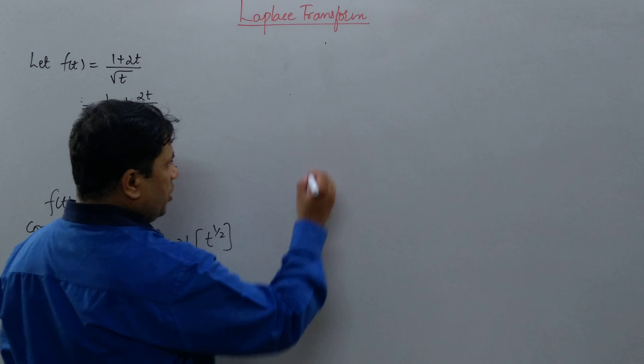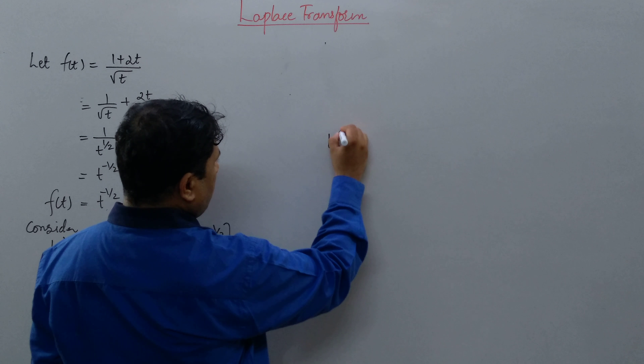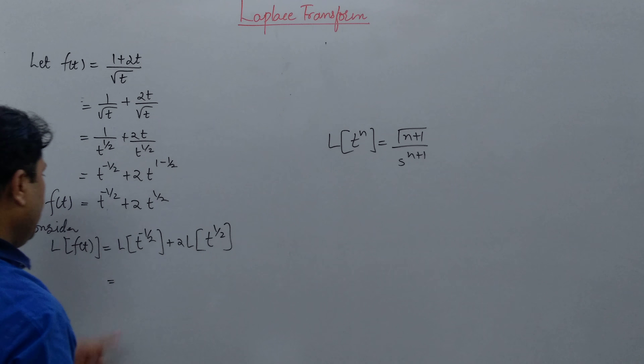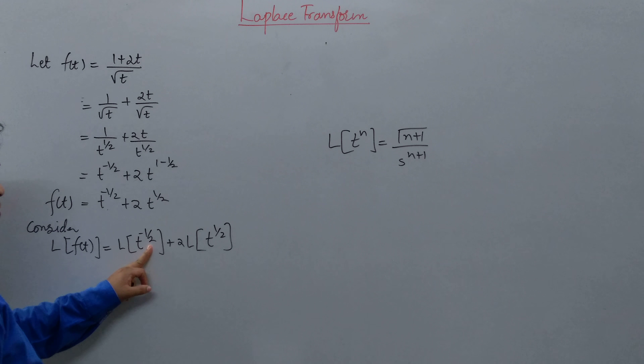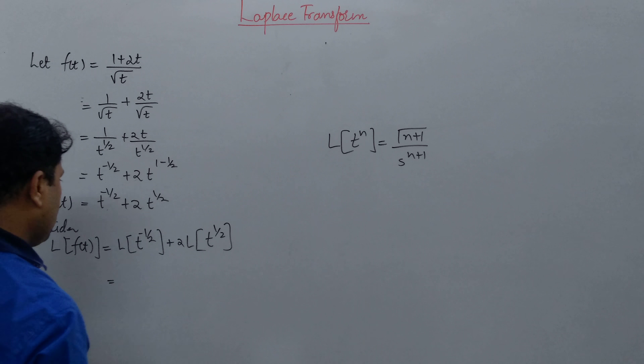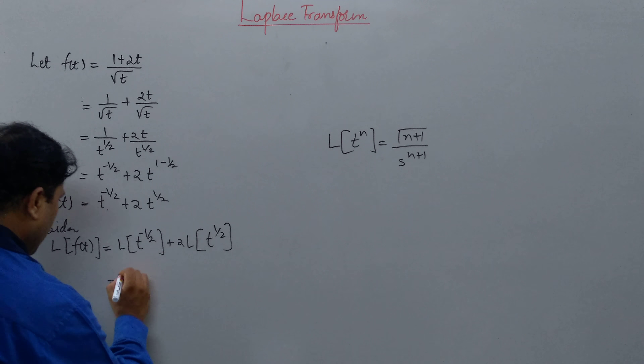We know the formula for the Laplace transform of t^n, which is Γ(n+1) / s^(n+1). Here, for the first term n is equal to -1/2, and for the second term n is equal to 1/2.